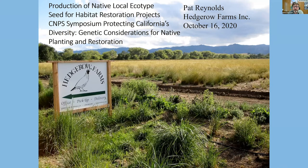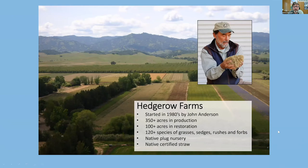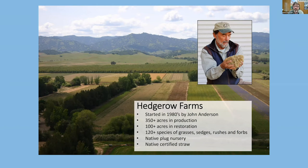Good afternoon. I'm Pat Reynolds, and I'm the general manager of Hedgerow Farms. I look forward to talking about how we produce seed of known genetic origin for habitat restoration projects. Hedgerow Farms was founded in the 1980s by John Anderson — many of you may have heard that John Anderson passed away this year. He left a legacy with the setup of Hedgerow Farms, where we produce thousands of pounds of seed of known genetic origin. Today the farm has about 350 acres in production, around 100 acres of habitat surrounding and bisecting the farm, and we grow more than 120 different species.